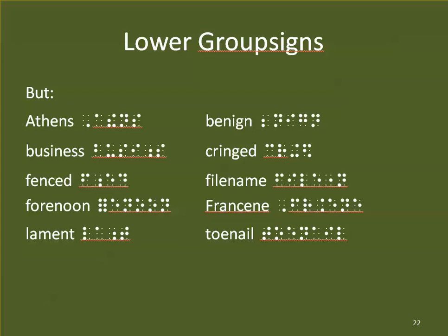Here is the exceptions page. Athens — not using EN; THE is strong and wins. Business — not using IN. Fenced — not using EN. Forenoon — not using EN because it's a compound word. Lament — not using EN because MENT wins. Benign — not using EN because BE wins. Cringed — not using IN because ING wins. Filename — not using EN across two words of a compound. Francine — not using EN; it would take too much space, so we use ANC instead. And toenail bridges compound words, so we're not using EN.